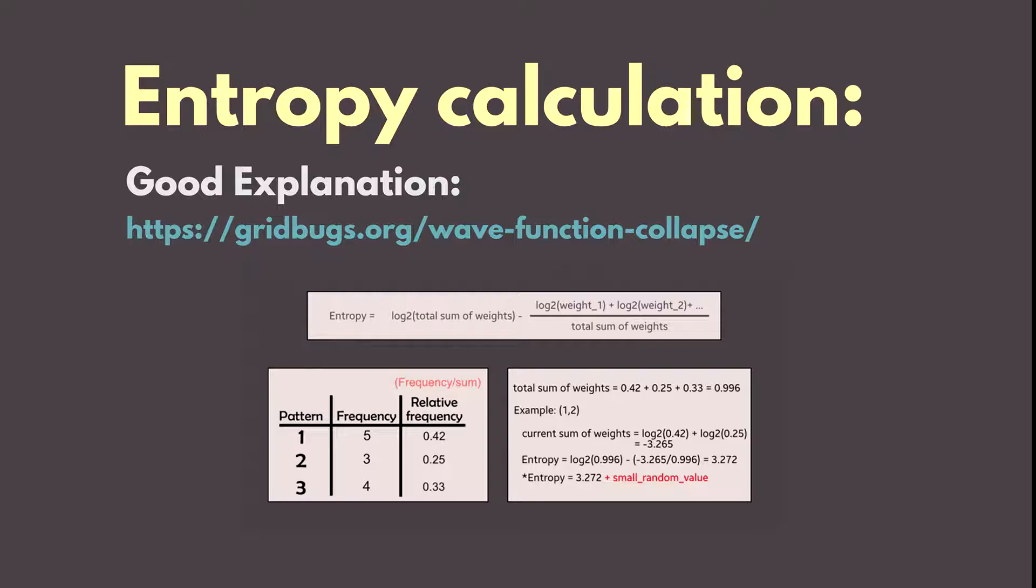We use the sum of all weights, so 0.996. The logarithm of base 2 for the value. And the sum of logarithms with base 2 for weights for each possible pattern index in the list of possible values for a cell in the output grid.